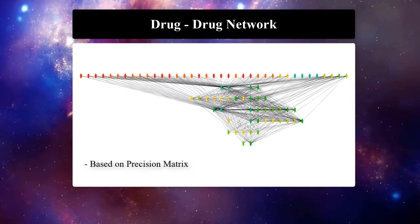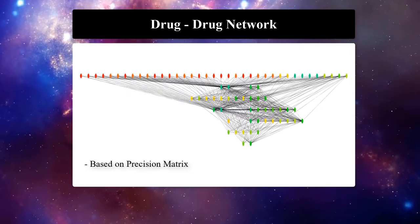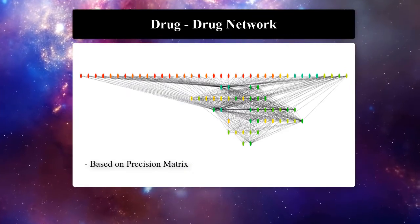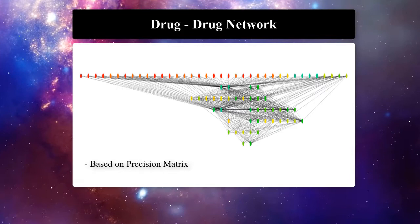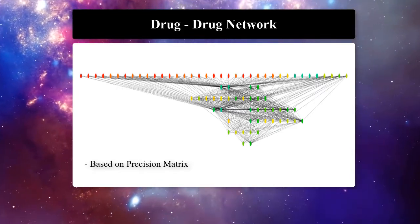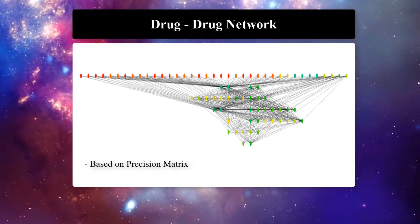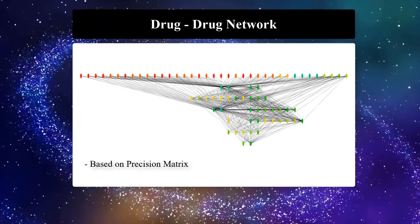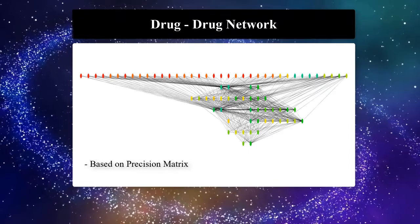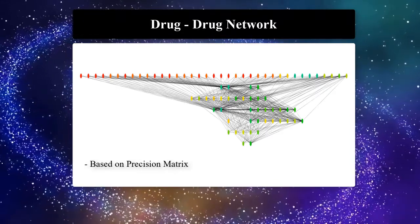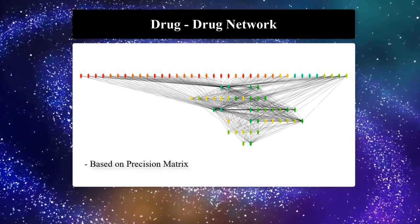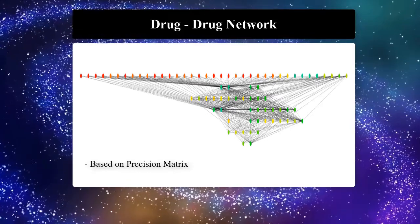As another example of biological networks, here we have a drug-drug interaction network. This network has been reconstructed based on similarity of the effect of each drug on a set of genes. This type of network is very useful in drug repurposing.